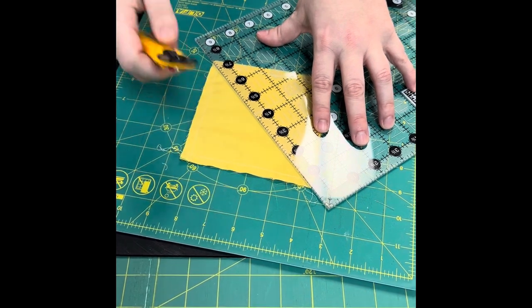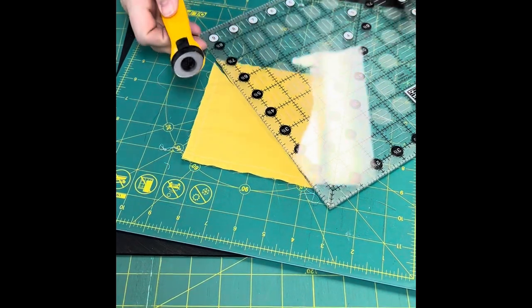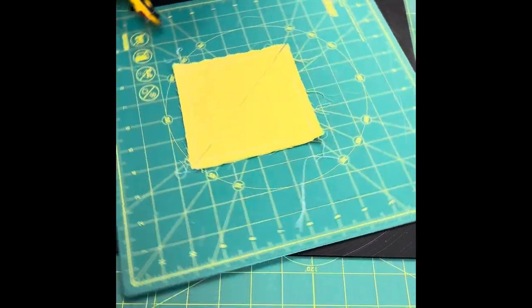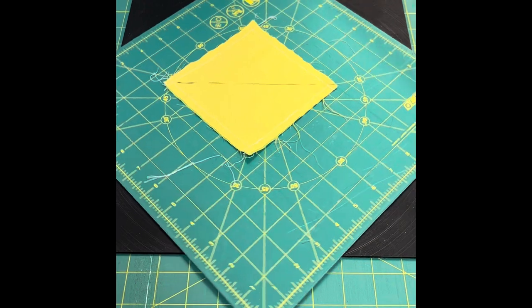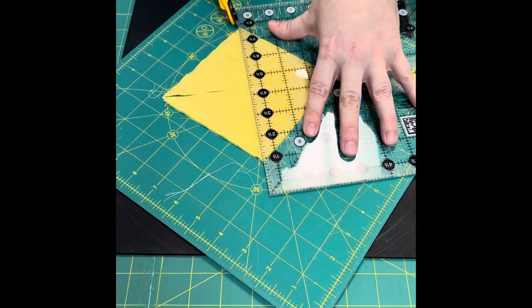Take your nice small rotary cutter and cut across. Now this is the beauty of the rotating mat. I can turn it all the way around and then place it from the other edge to edge and cut across again.